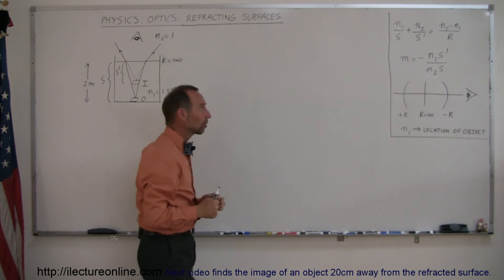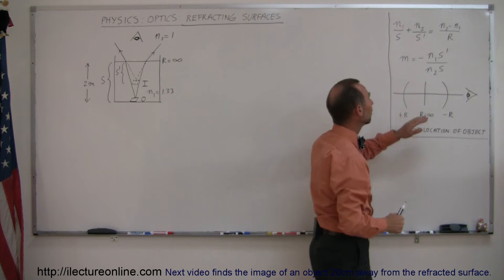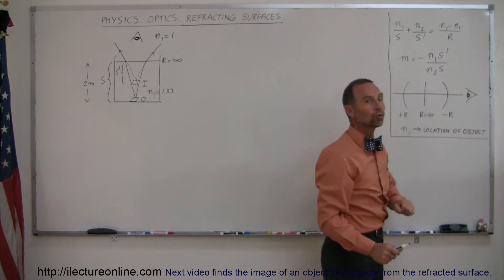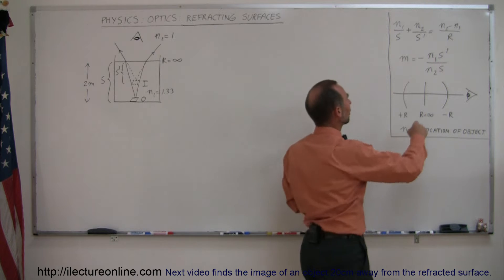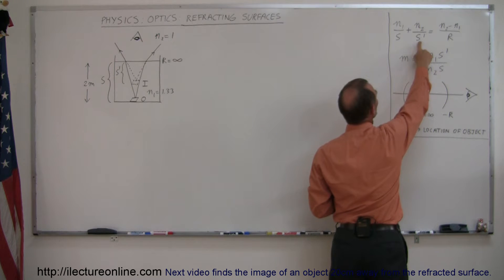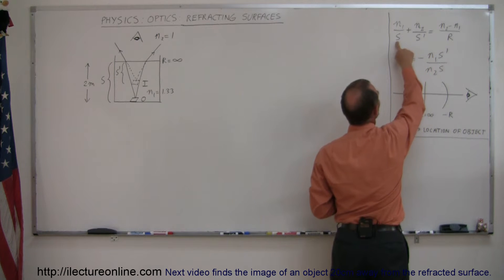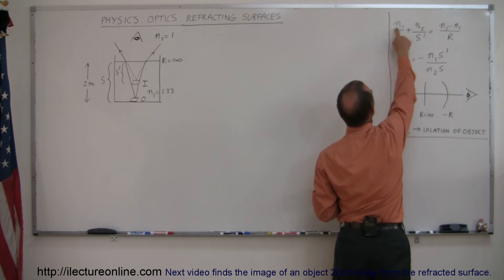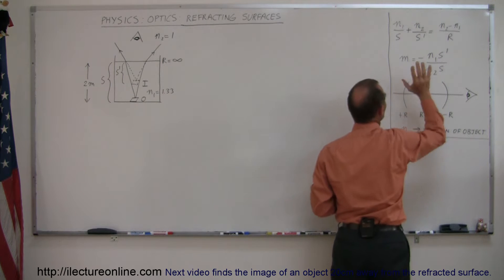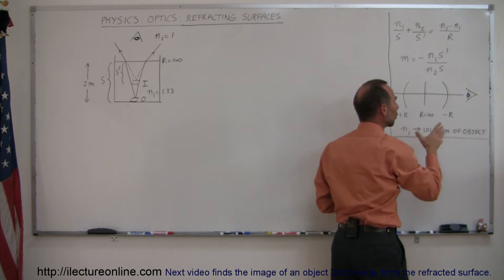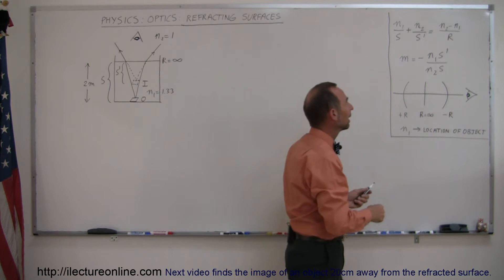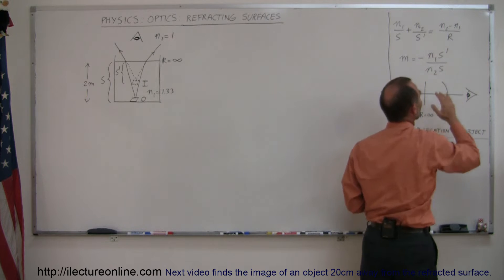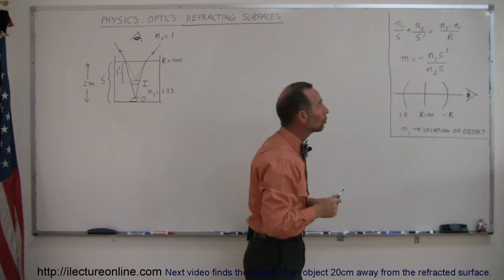First, we're going to look at some general statements. This is the equation we're going to use to indicate where the image distance will occur. We're trying to find where the image will occur, which is S prime, given the position of the object. N1 is the index of refraction of the medium where the object is at, and R is the radius of curvature of the boundary between the two mediums.